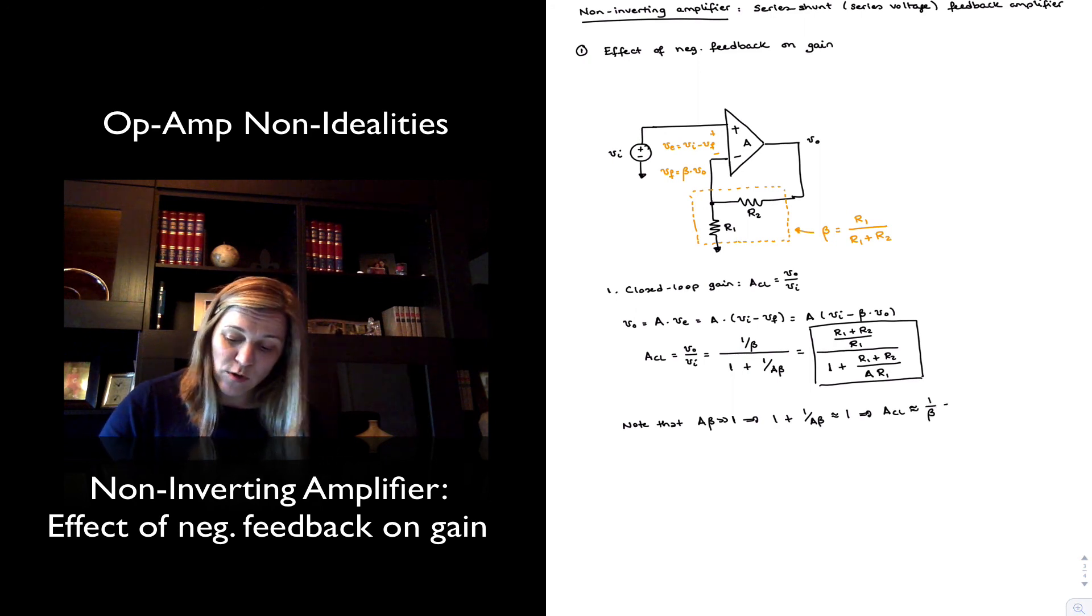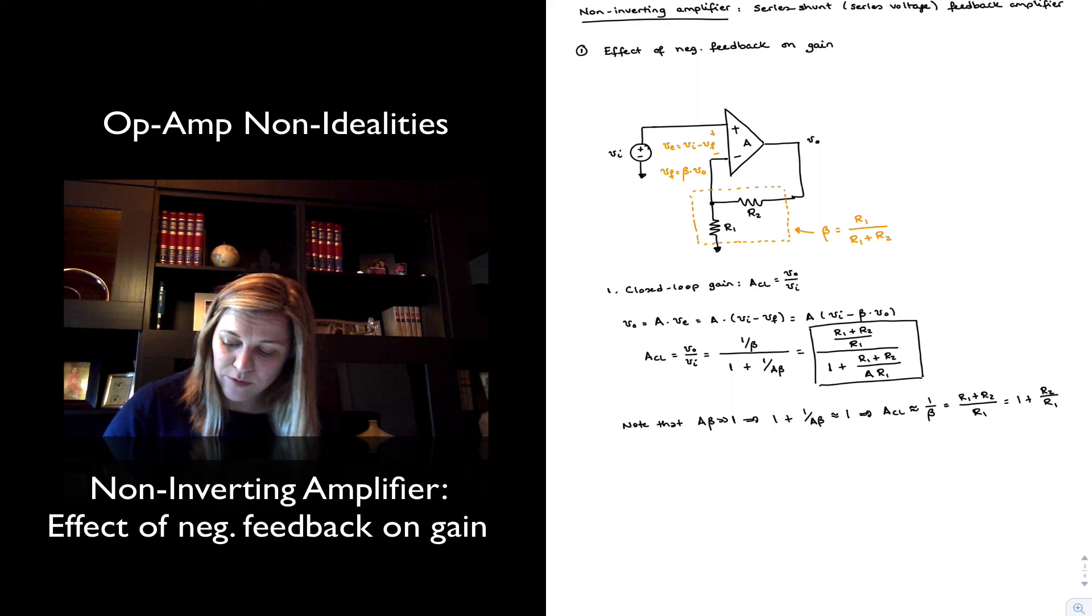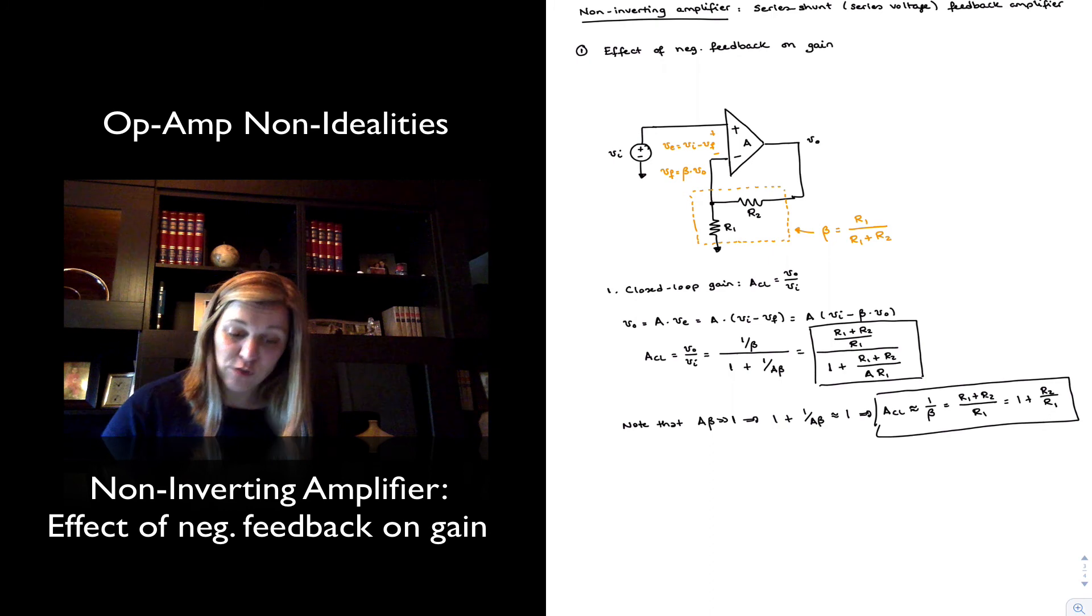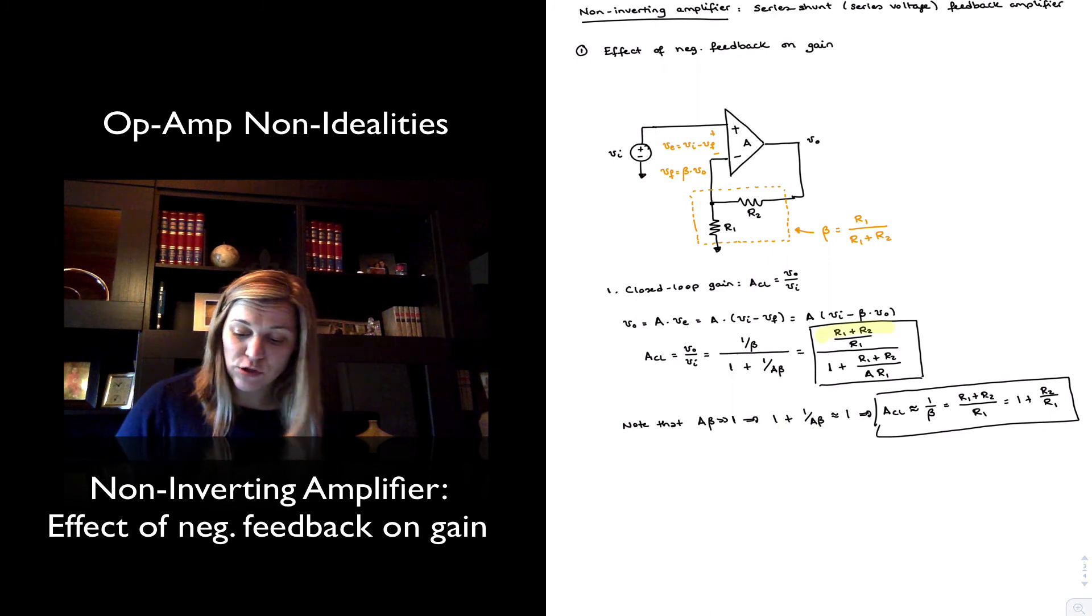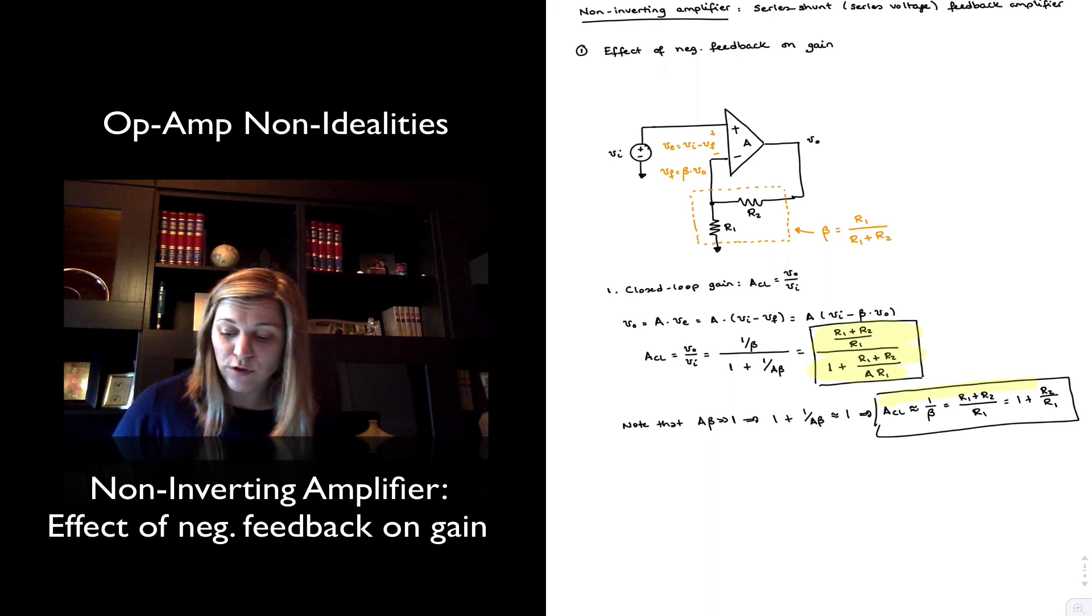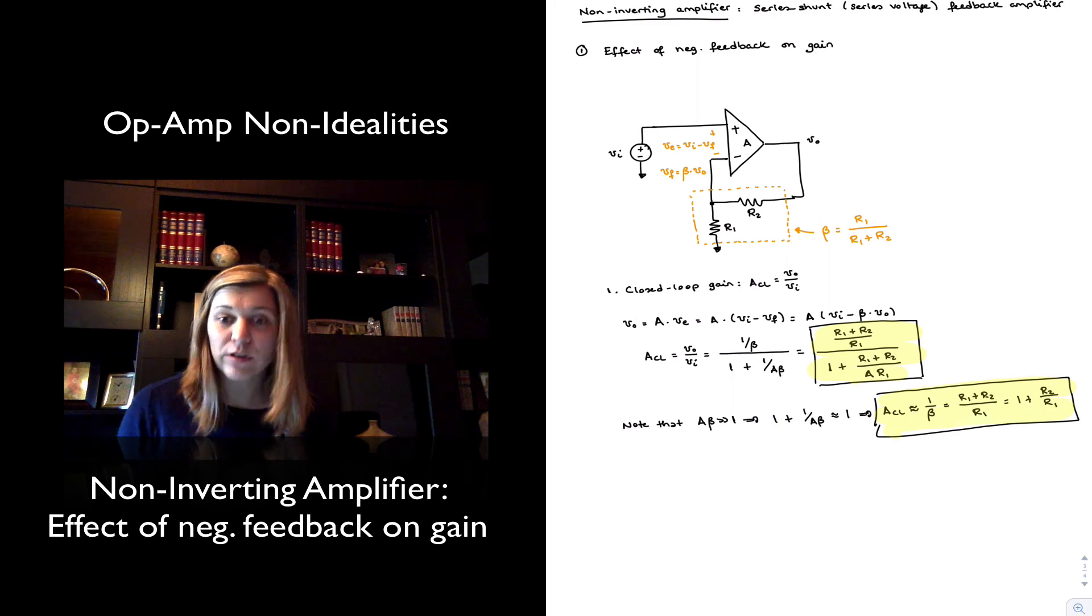In this case, 1 over beta will be R1 plus R2 divided by R1, which can also be expressed as 1 plus R2 over R1. We can see the approximation leads us to the expression for the closed loop gain of the non-inverting amplifier that we already should be familiar with.